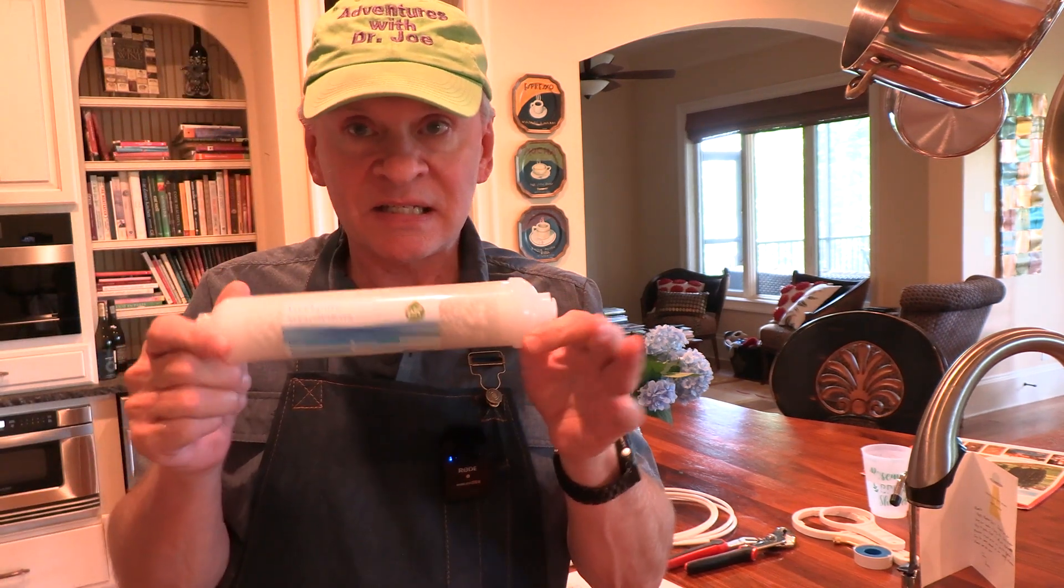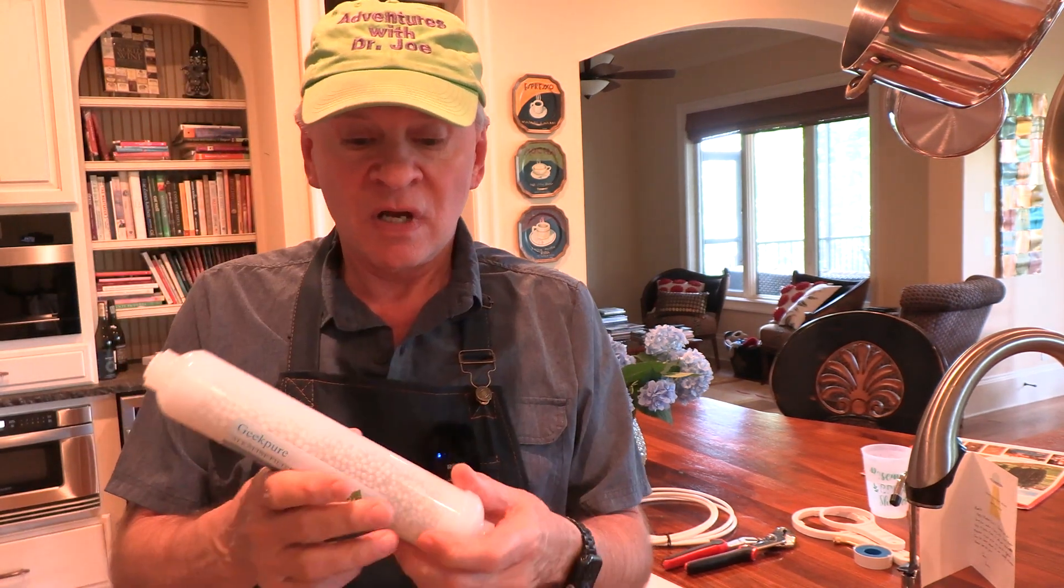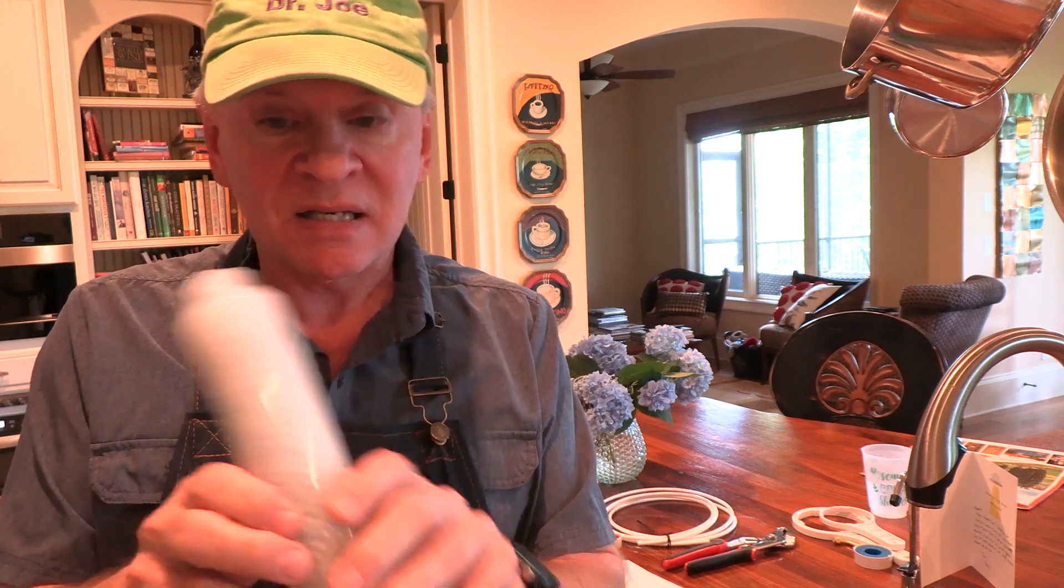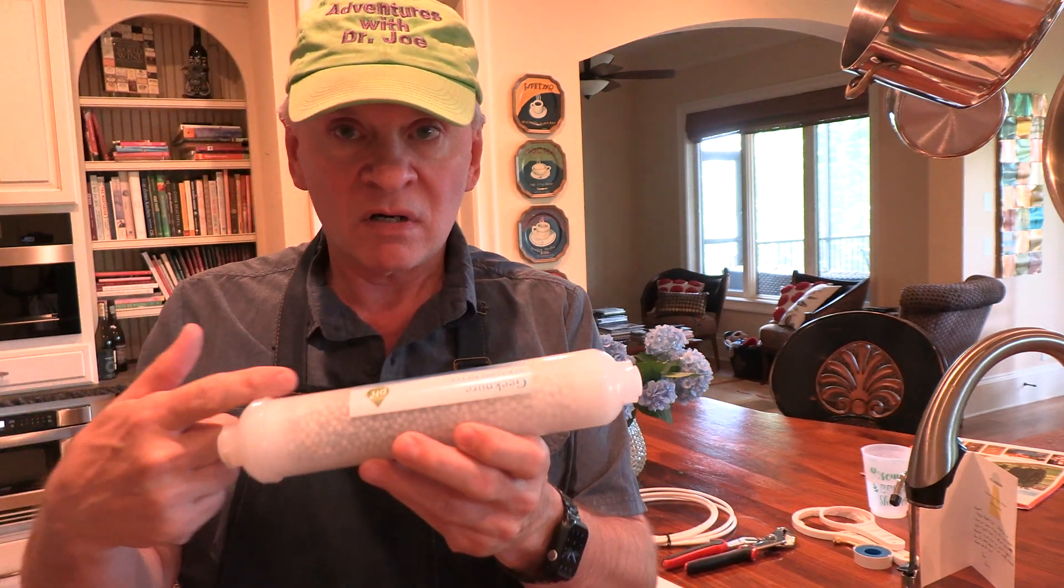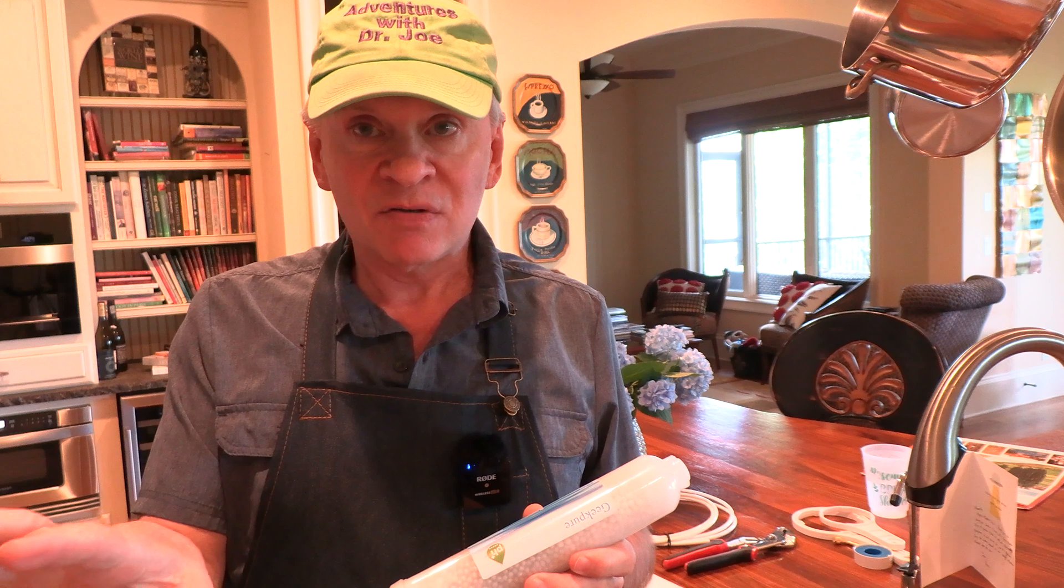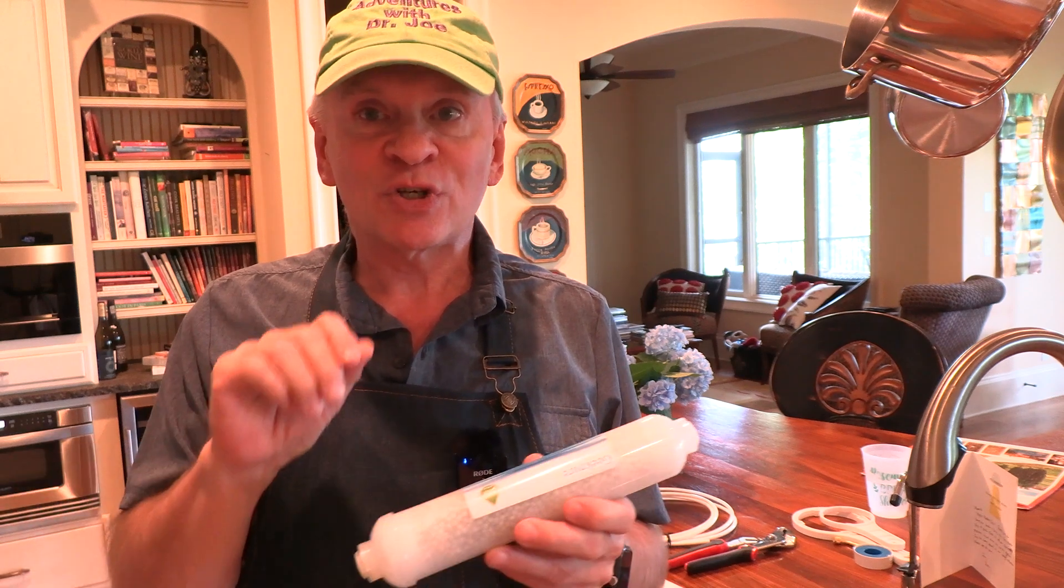This is what the sixth stage looks like. It's a tube filter that's full of these beads that when the water is passing through it, allows those minerals to go into the water and into your drinking water.